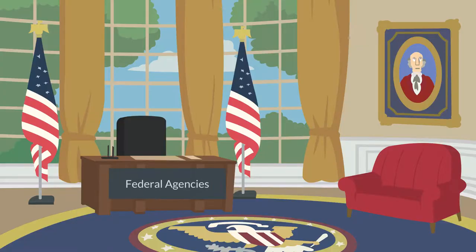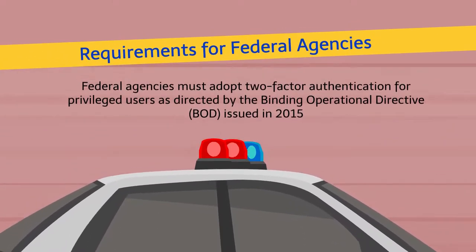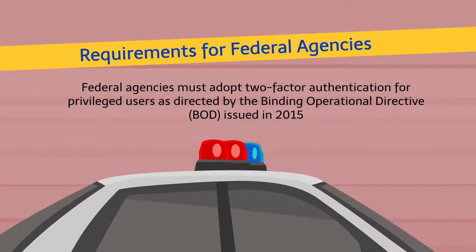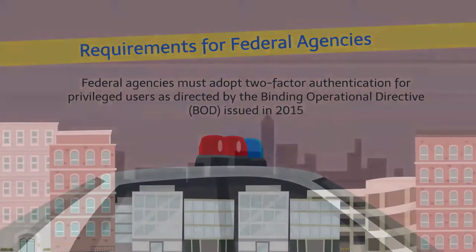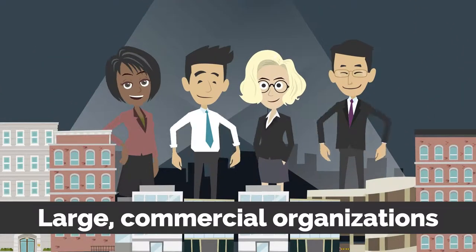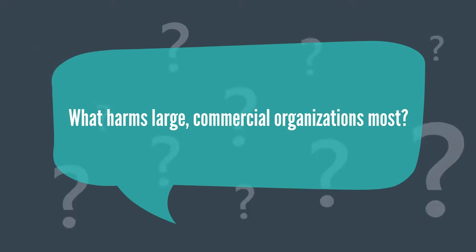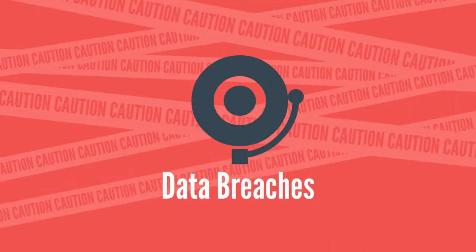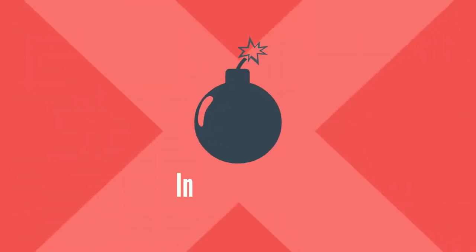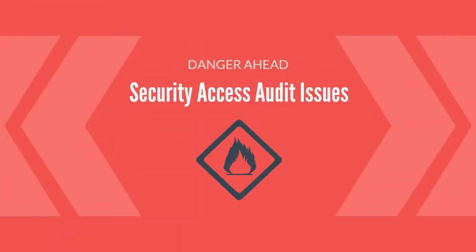So what is the marketplace need? Federal agencies must adopt two-factor authentication for privileged users as directed by the Binding Operational Directive issued in 2015. Large commercial organizations need to avoid destructive processes — and what harms them most? Data breaches, insider fraud, and security access audit issues.